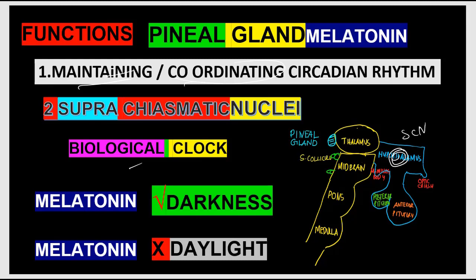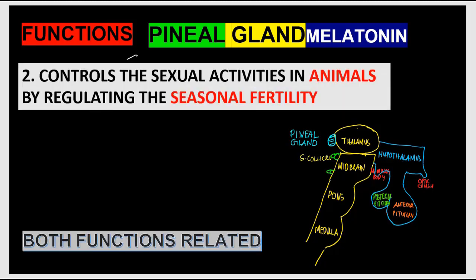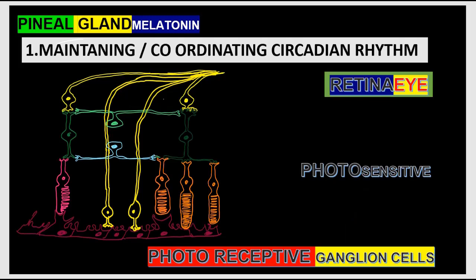Melatonin is synthesized during darkness and inhibited during daylight. The second function of melatonin is related to reproduction and seasonal fertility in mammals — important in certain mammals but not well established in humans. During long dark periods, more melatonin is produced, which reduces reproduction; in lighter conditions (summer), less melatonin leads to more reproduction.